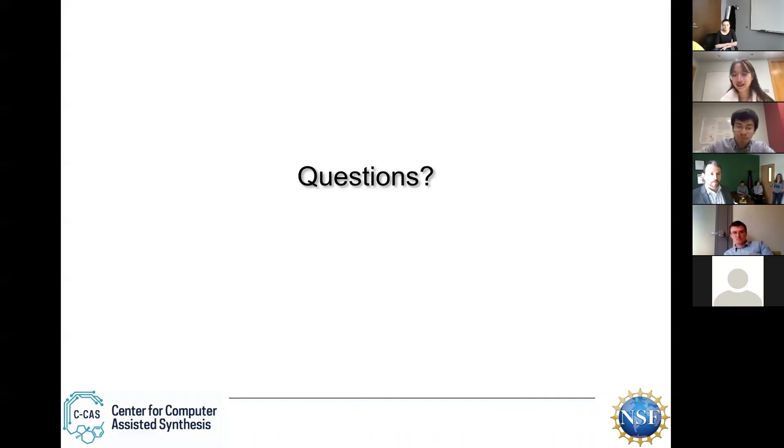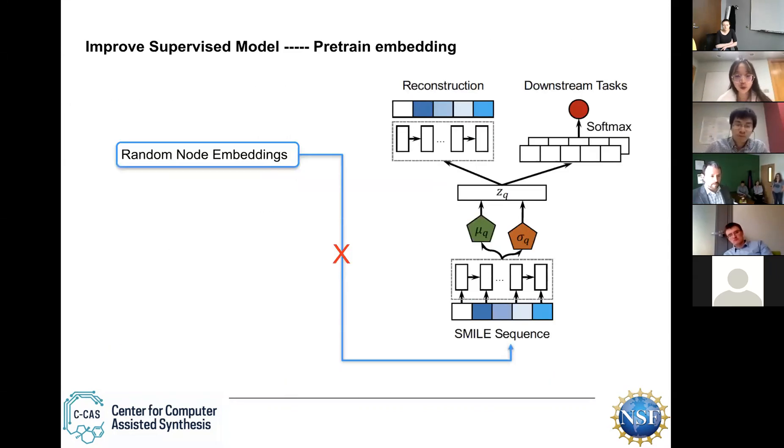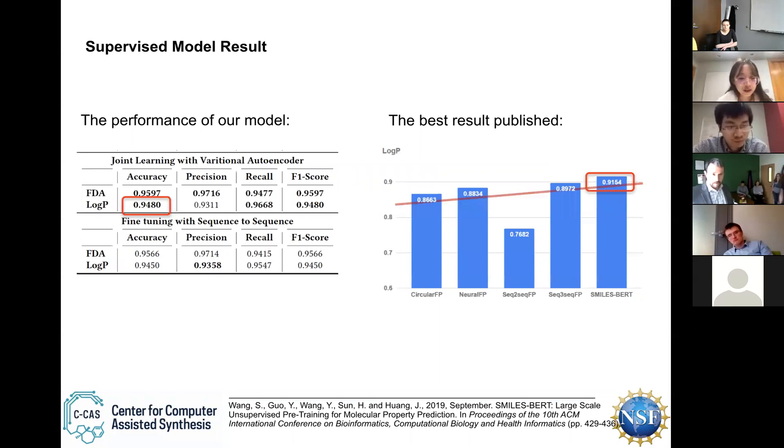So when you talk about the improvements, at what point are we saying it's statistically meaningful? So when you talk about these improvements, from like your results to the SMILES BERT or even to the seq to seq, at what point is it really statistically meaningful to really say, okay, this is something that is a significant improvement or how much of it is noise?